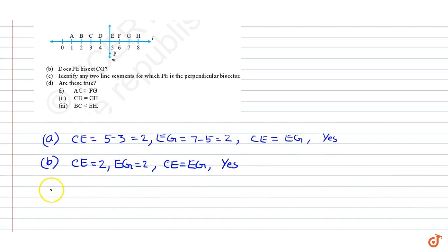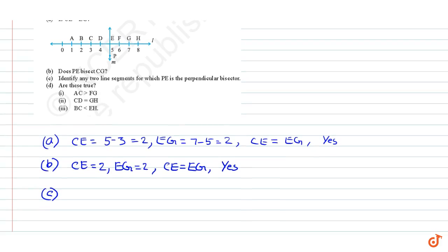Part c: Identify any two line segments for which PE is the perpendicular bisector. Since PE is perpendicular to line l, it is a perpendicular bisector of line segment DF, and it is also a perpendicular bisector of line segment CG.